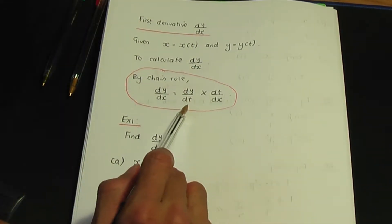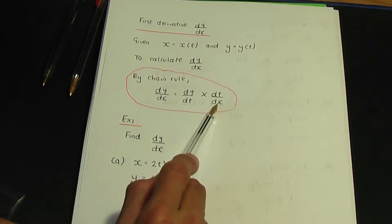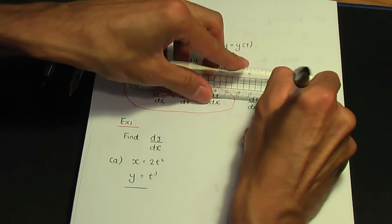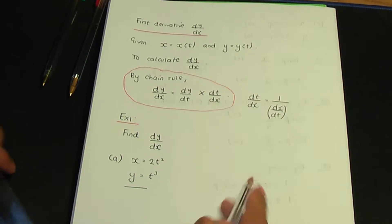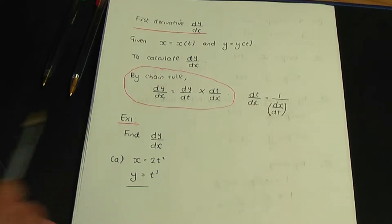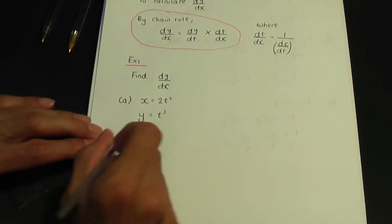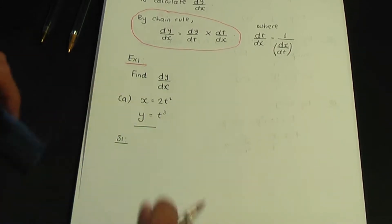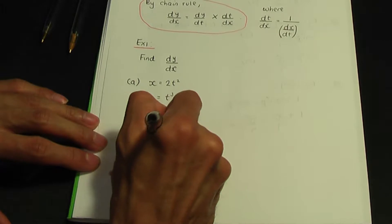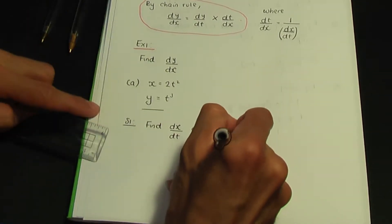According to the chain rule, to calculate dy over dx we need dy over dt and dt over dx. To work out dt over dx, note that dt over dx equals 1 over dx over dt. So step one is to work out dx over dt and dy over dt.